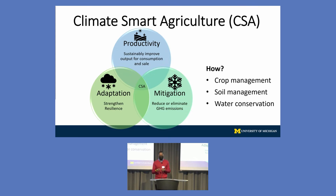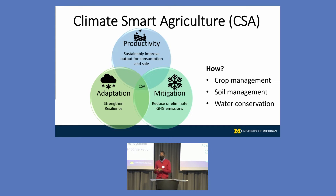My project looks at three aspects of agricultural productivity: crop management, soil management, and water conservation. In crop management, can we manage cropping activity in such a way that we improve productivity, reduce greenhouse gas emissions, and build resilience among farmers? For soil management, instead of applying fertilizer to an entire farm, can we use technology to identify specific nutrient-deficient areas and apply soil amendments only there? And for water conservation, can we introduce technologies or cropping patterns that help conserve and reduce water use?